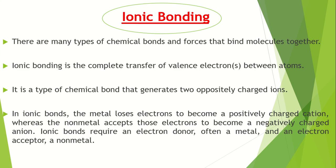There are many types of chemical bonds and forces that bind molecules together. Ionic bond is the bond which is formed by the complete transfer of one electron or more than one electron from one atom to another atom. It is the type of chemical bond that generates two oppositely charged ions.